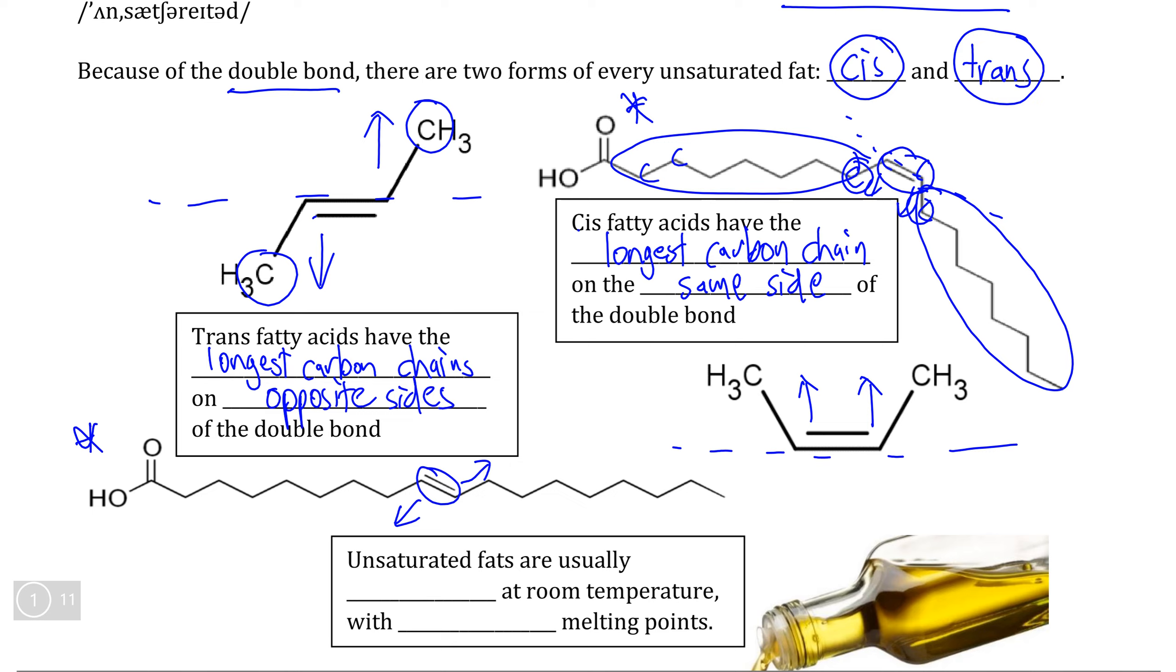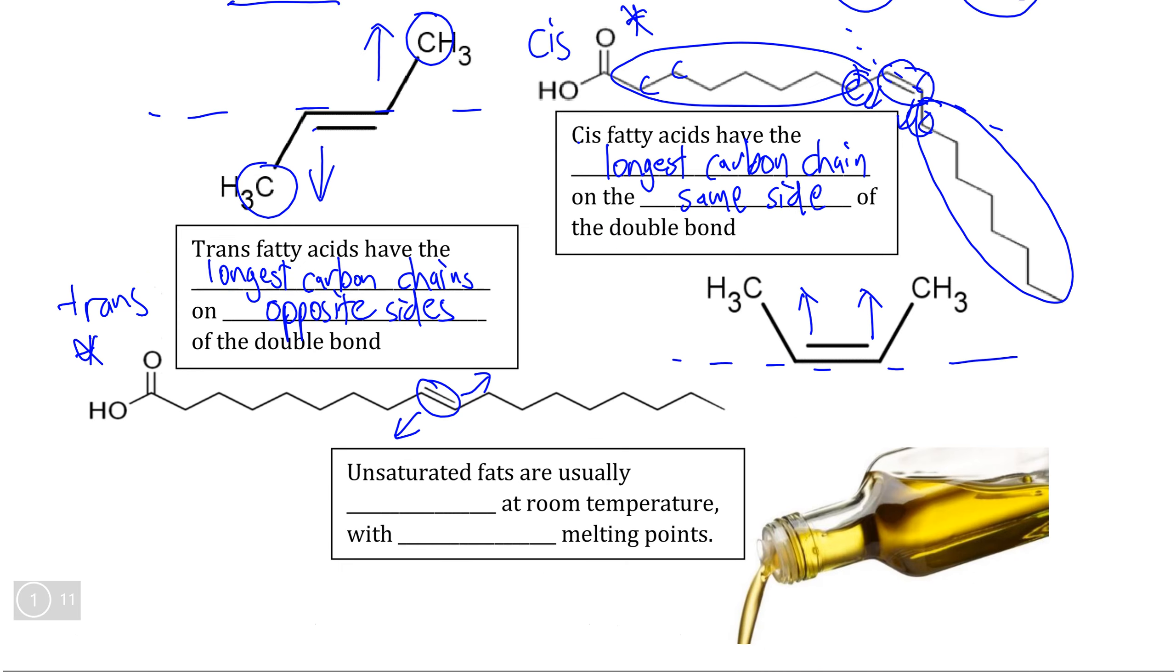Therefore, if we have the two longest carbon chains coming off on the same side of the double bond, this is the cis form of the molecule while the trans form of the molecule would have them pointing in the opposite direction.